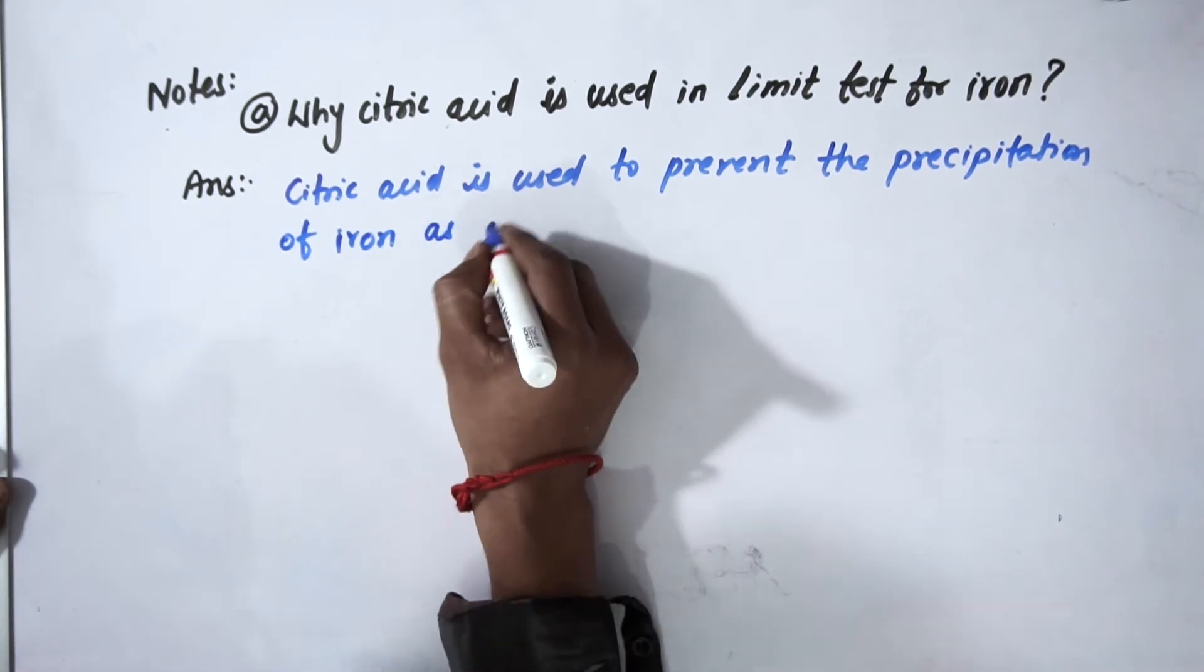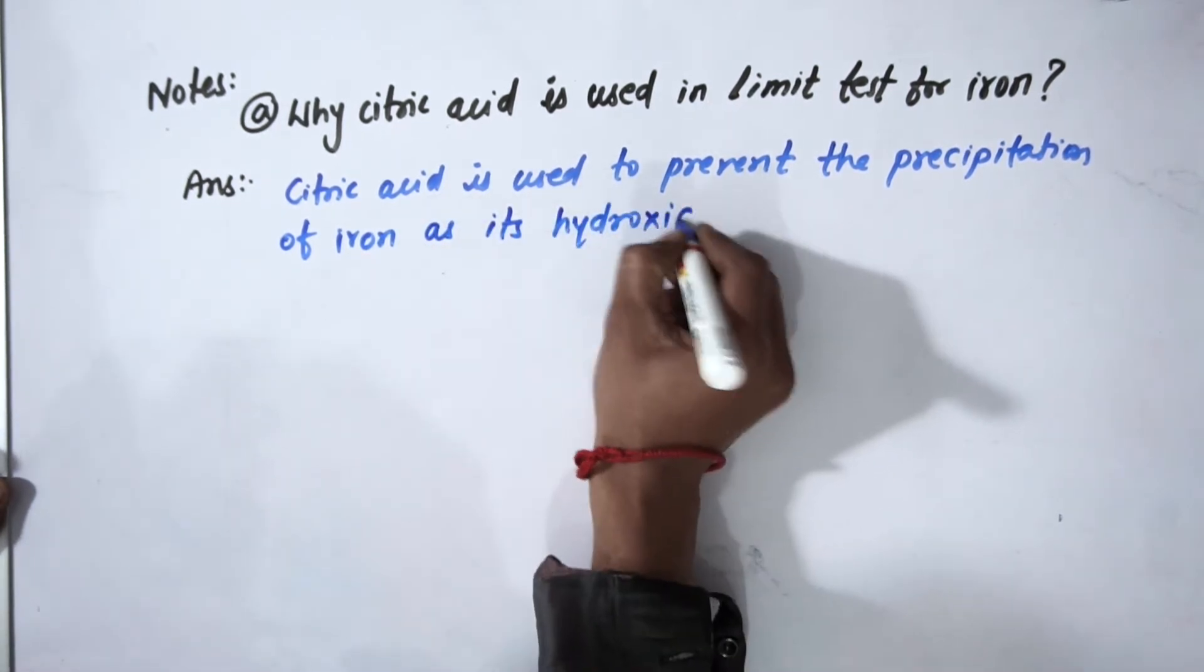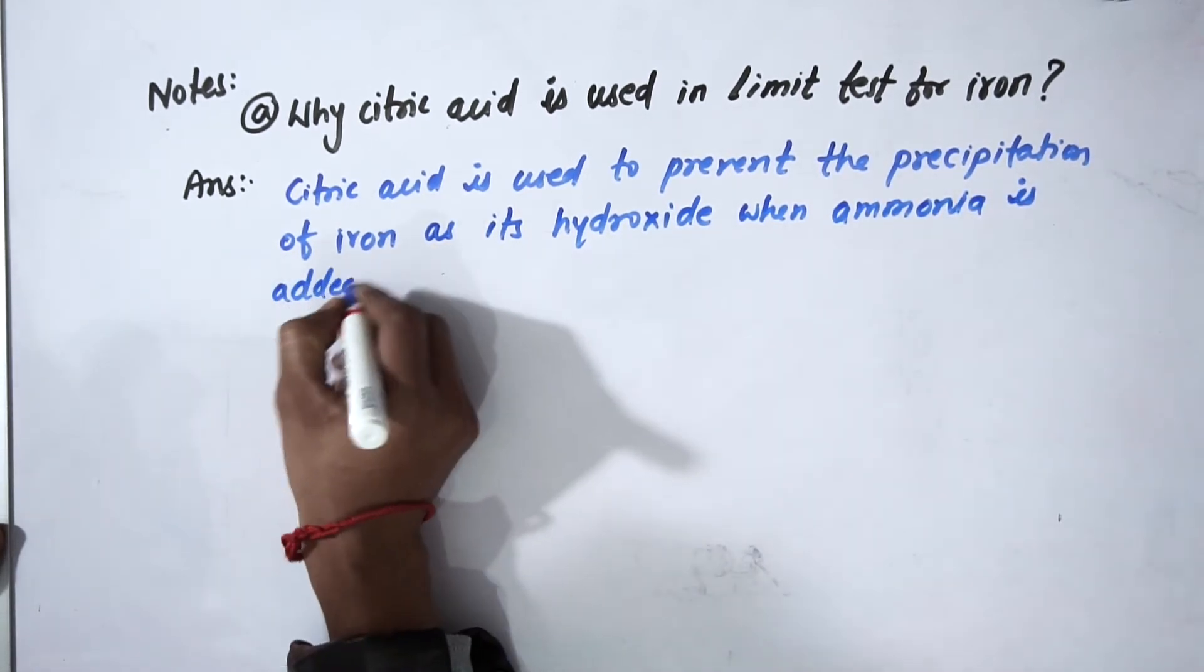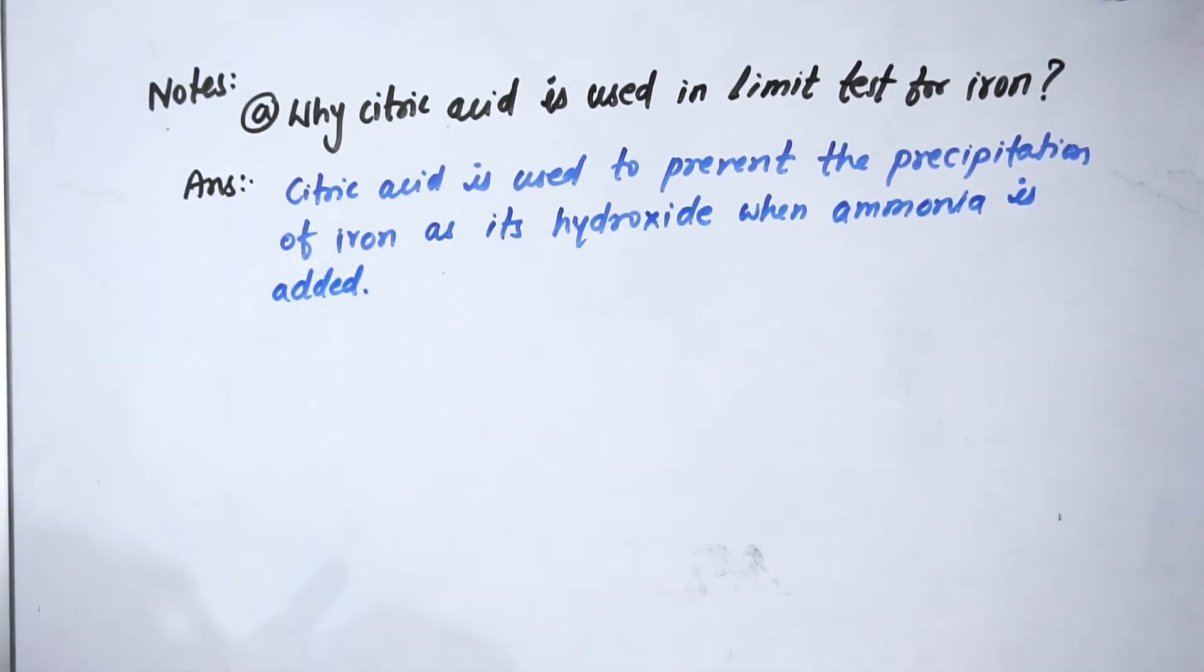What does this mean? When ammonia is added, iron will precipitate as its hydroxide. Once it precipitates as hydroxide, it will not be available to react with thioglycolic acid, which is our reagent.